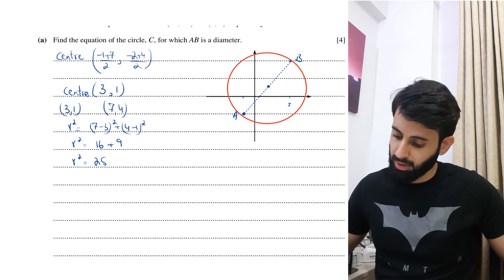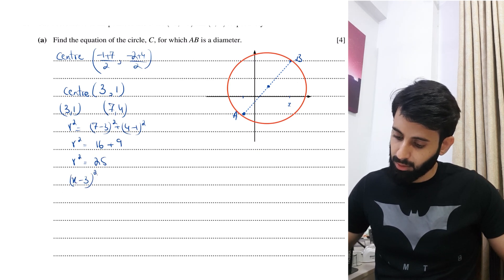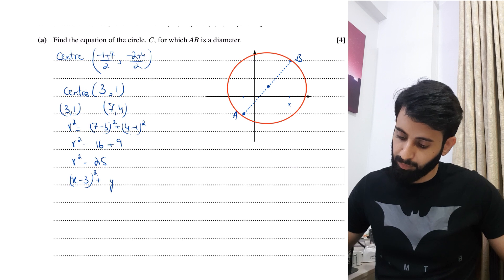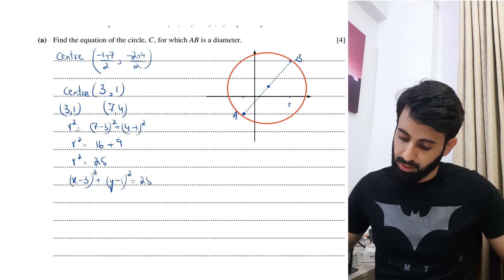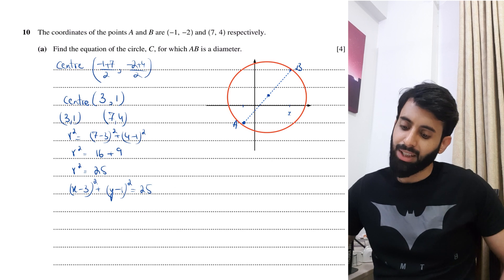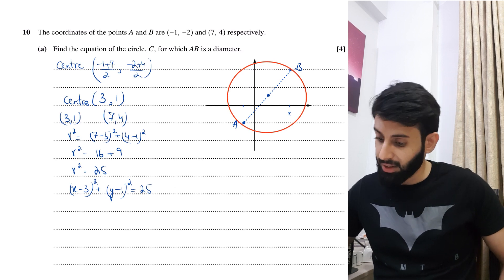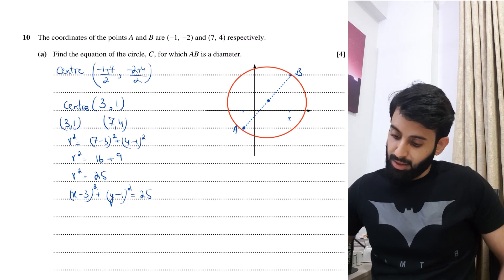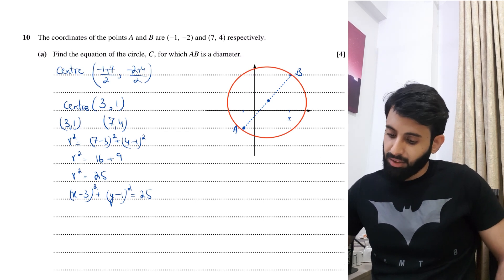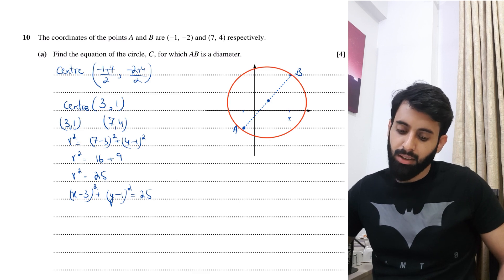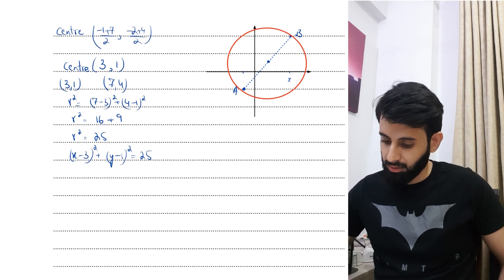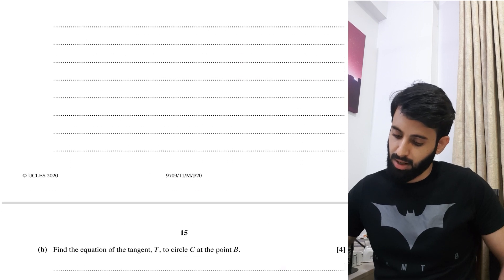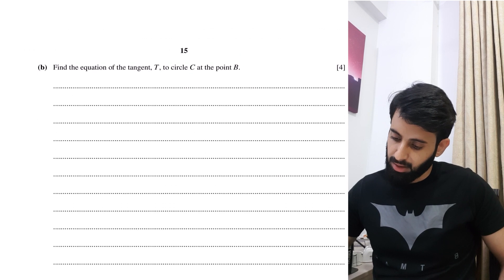Now we have all the ingredients — let's put them together. The equation of the circle is: (x minus 3) squared plus (y minus 1) squared equals 25. This is the circle with center 3, 1 and radius 5, with AB as its diameter.